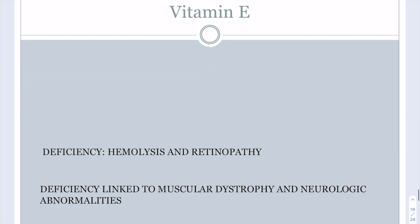Vitamin E is the quintessential antioxidant — if asked which vitamin is an antioxidant, choose vitamin E. Deficiency leads to hemolysis and retinopathy. Vitamin E protects cell membranes from reactive oxygen species; when membrane integrity is compromised, cells undergo lysis, so hemolysis of red blood cells makes sense for vitamin E deficiency. Deficiencies have also been linked to muscular dystrophy and various neurologic disorders.